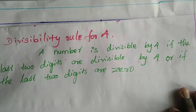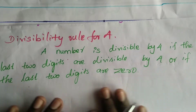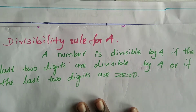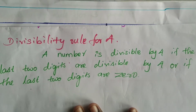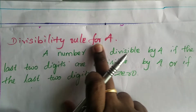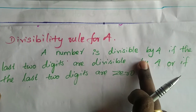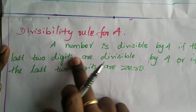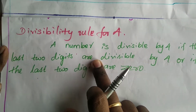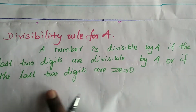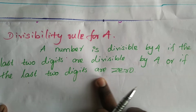Let's move on to today's section. Today we are going to see the divisibility rule for 4. A number is divisible by 4 if the last two digits are divisible by 4, or if the last two digits are 0.